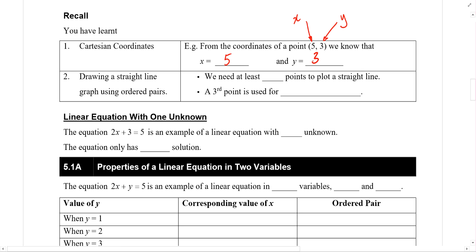We also learned how to draw a straight line graph using ordered pairs. We need at least 3 points to plot a straight line. The third point is used for checking.